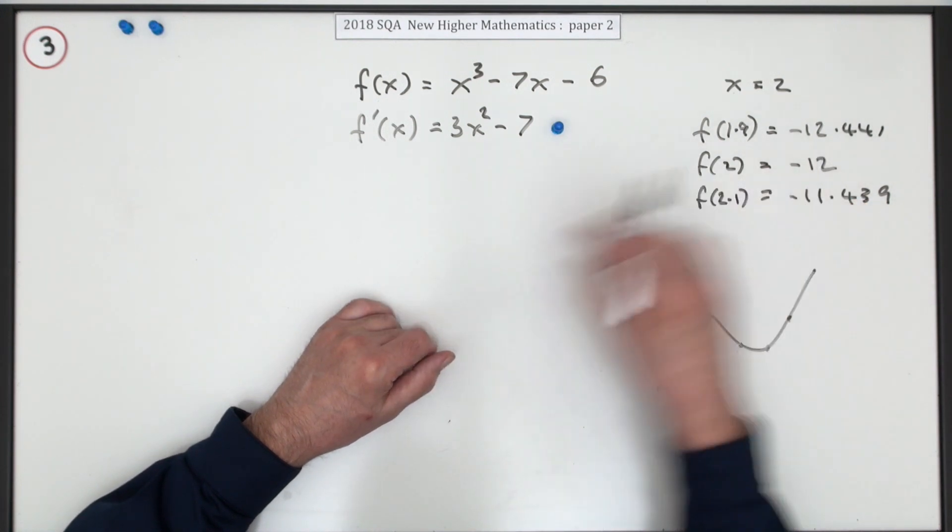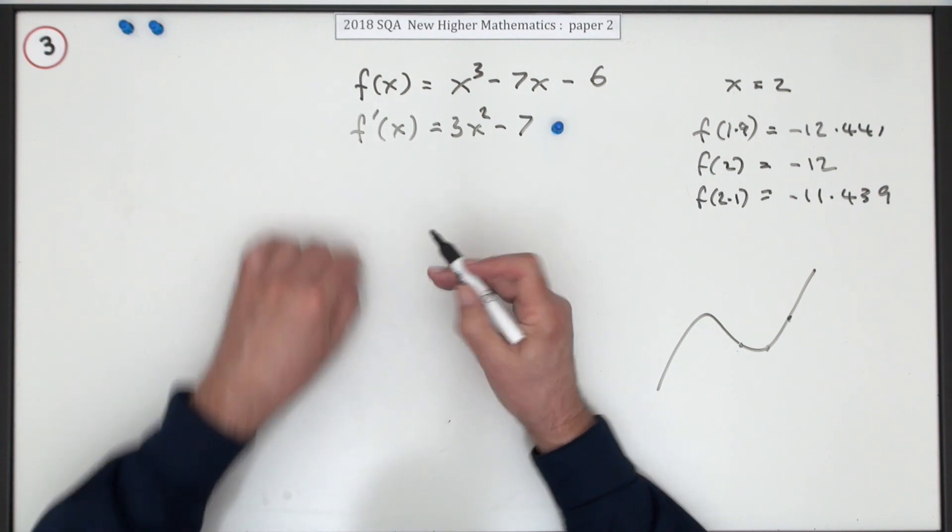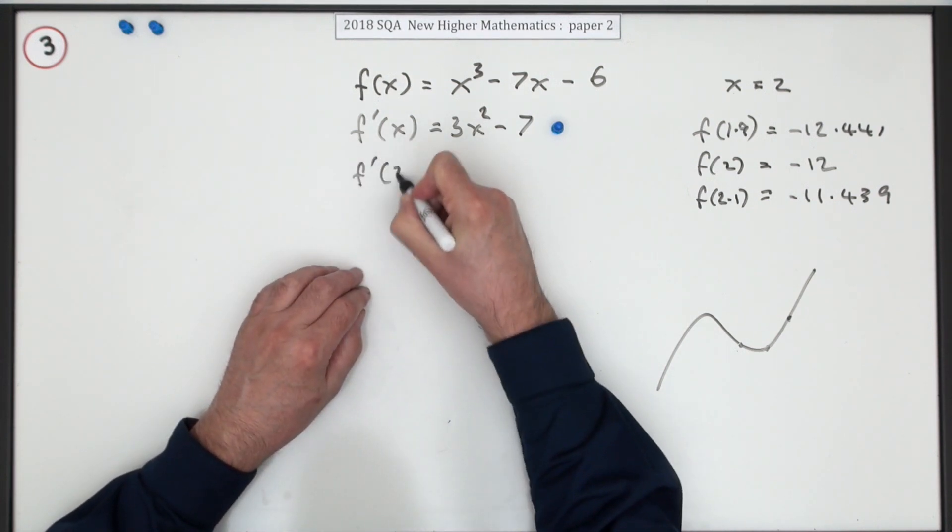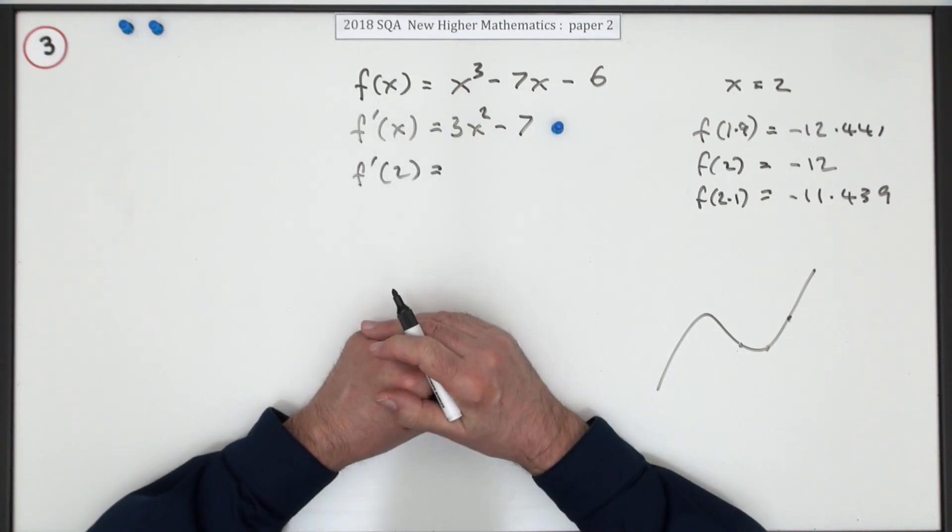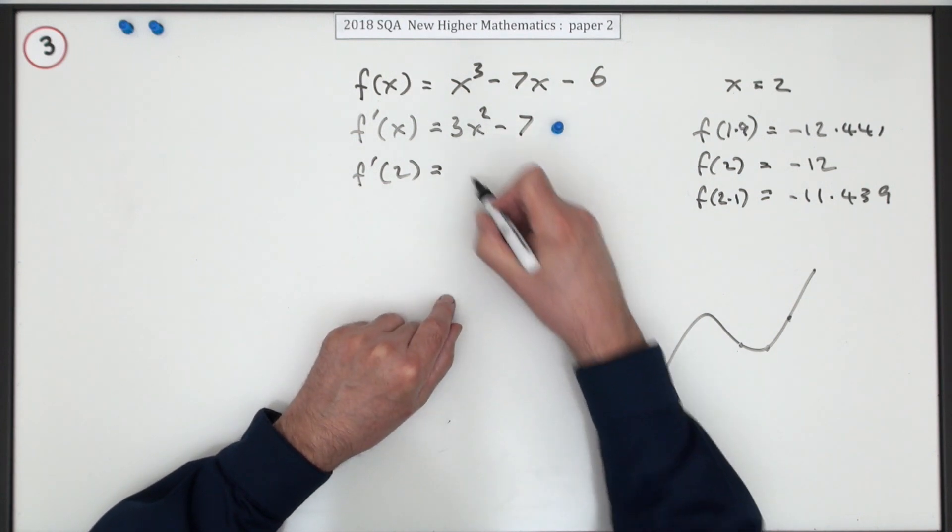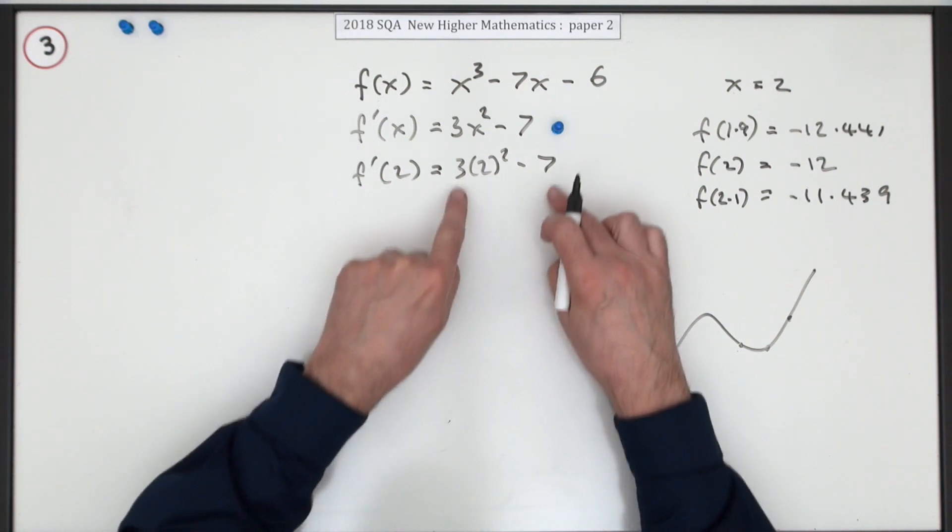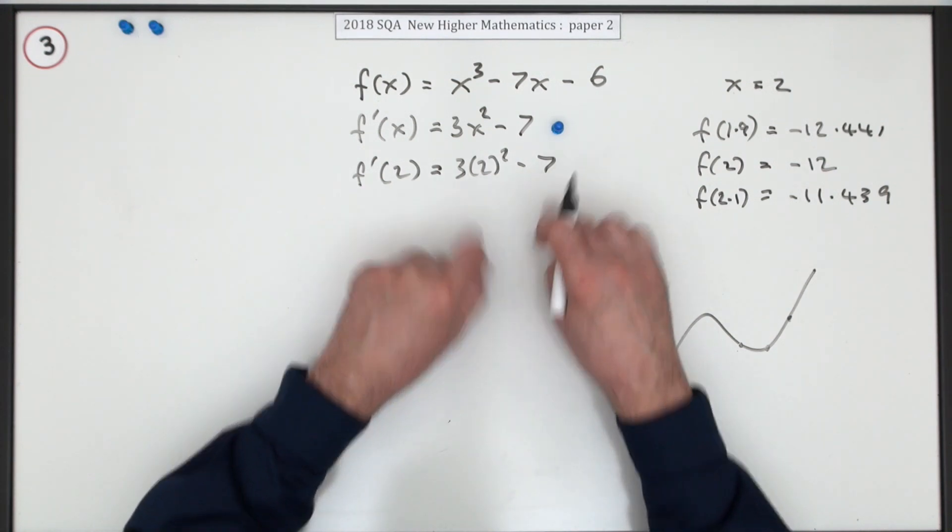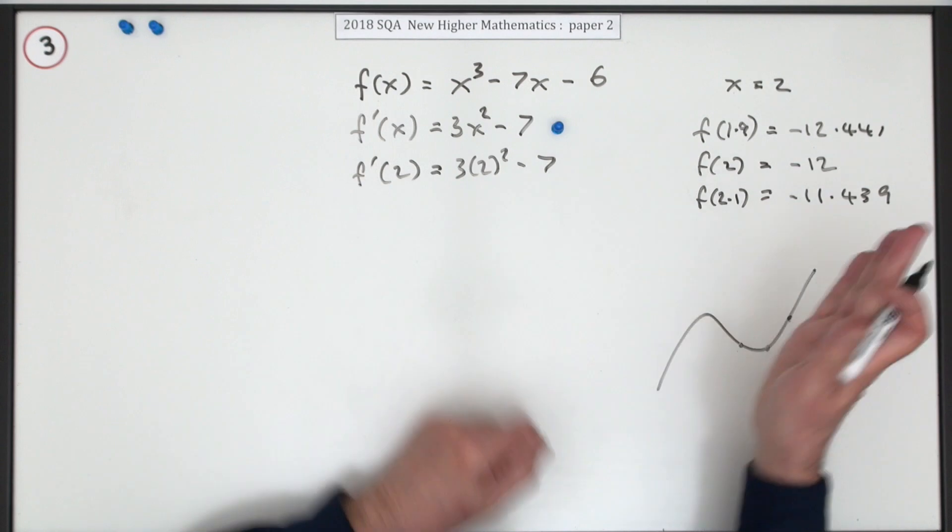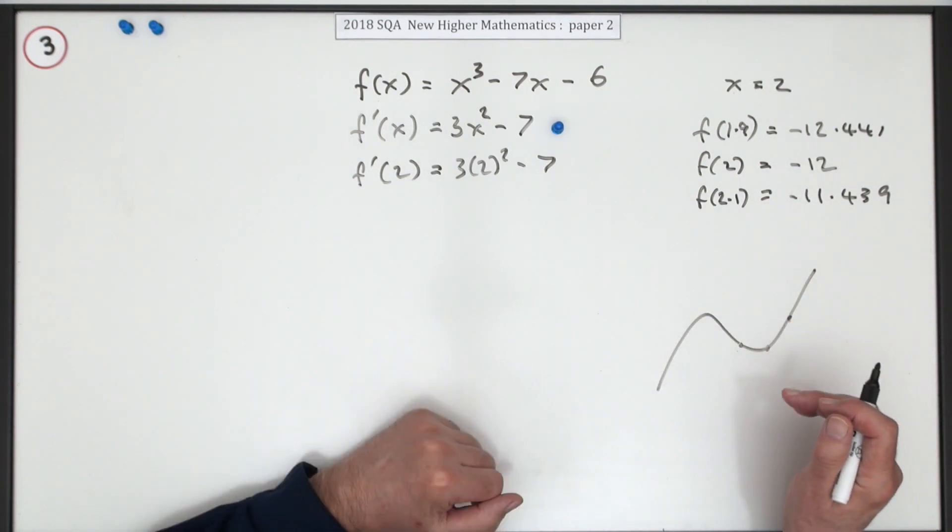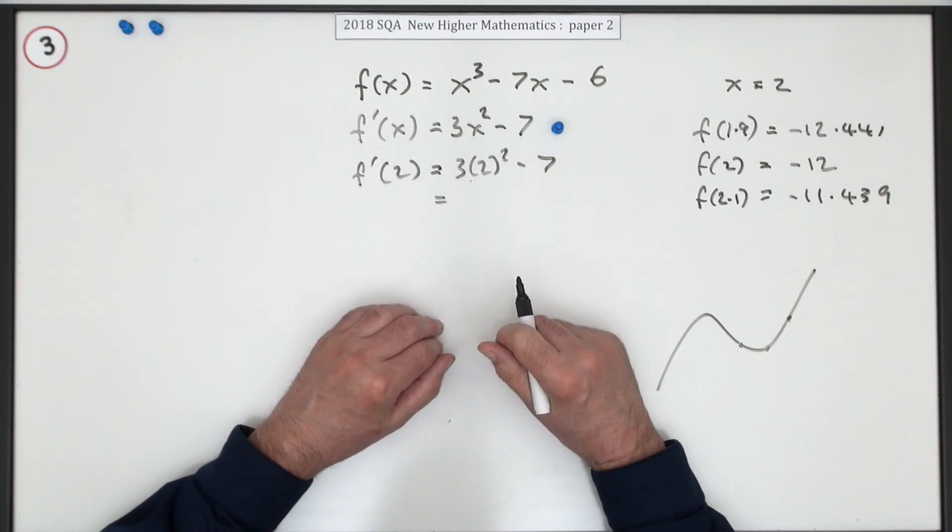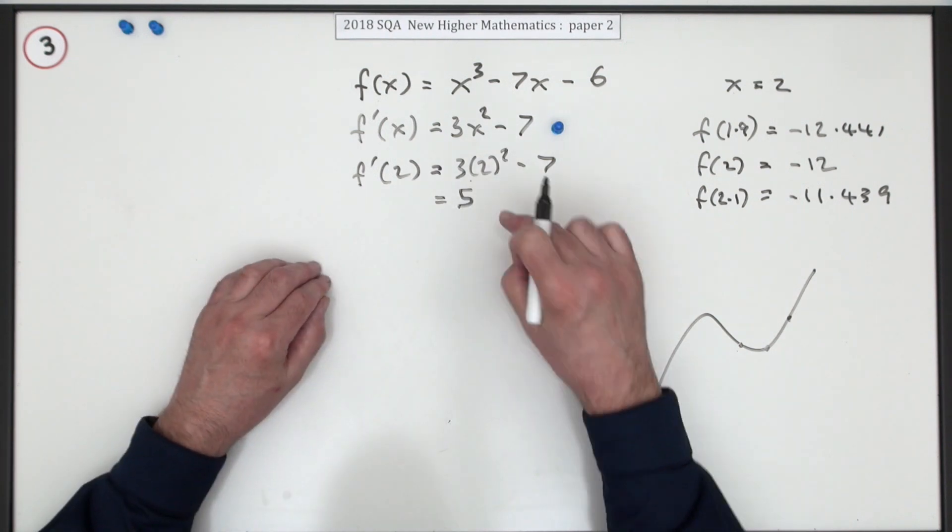So next part would be, and this is where it's handy, so what happens when x is two? We'll just put two into it: three times two squared minus seven. Now, you're not really interested in the numerical part of the answer, you just want to know whether it's positive or whether it's negative. But it doesn't take much to work that out because that comes to five, and there's a mark for that.